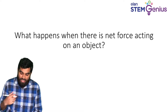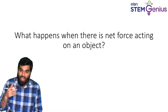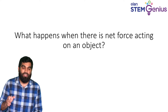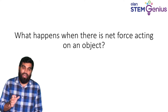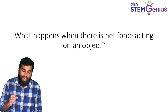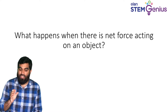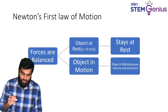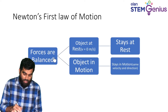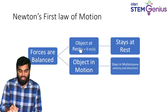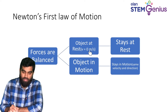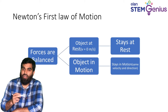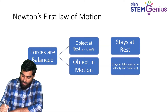So what happens when there is a net unbalanced external force acting on an object? That is what we are going to discuss in Newton's second law. For the first law recap: if the forces are balanced, then the object stays at rest — speed is zero — or if the object is in motion, it stays in motion. That is the first law of motion, also called the law of inertia.